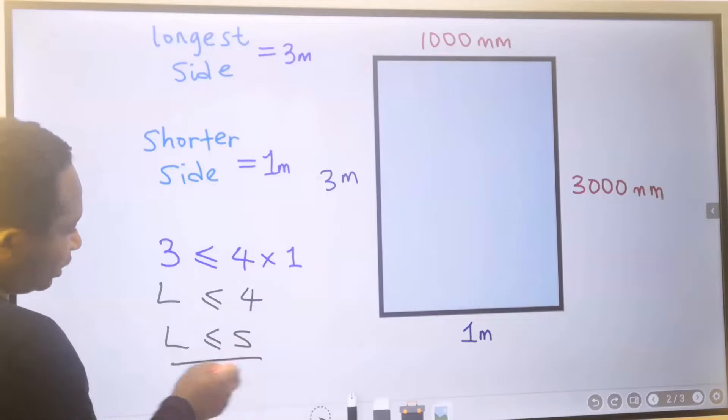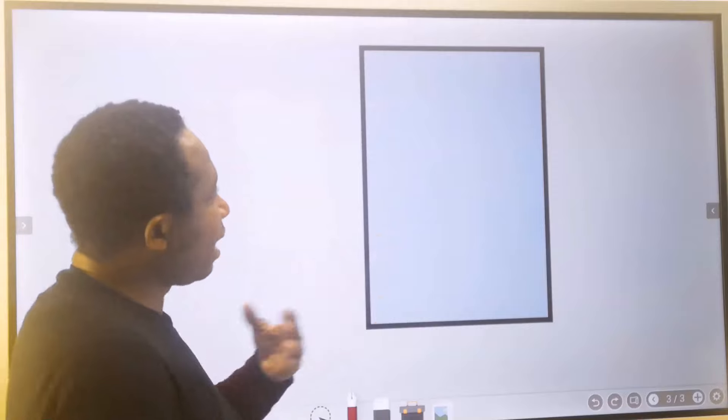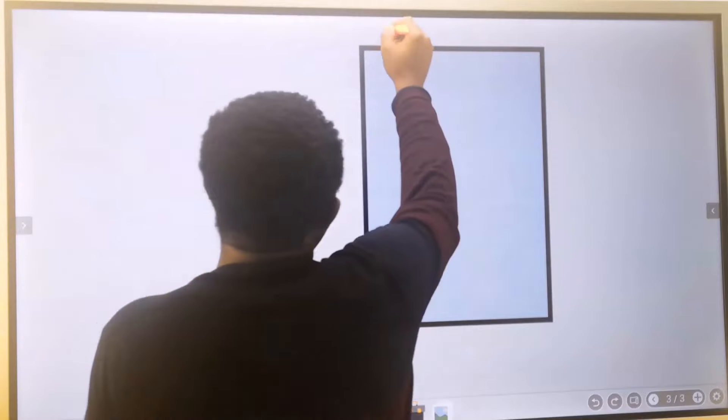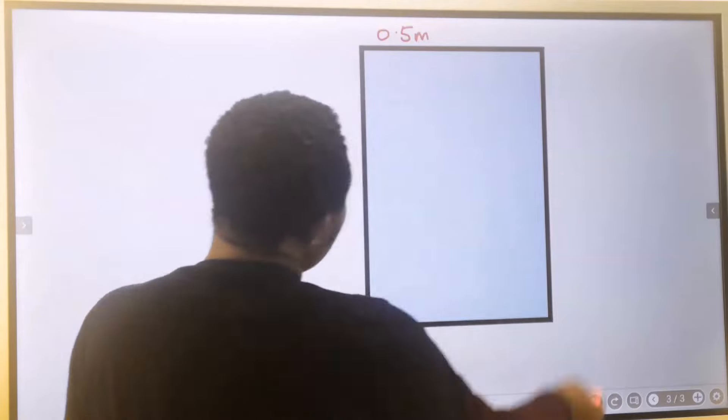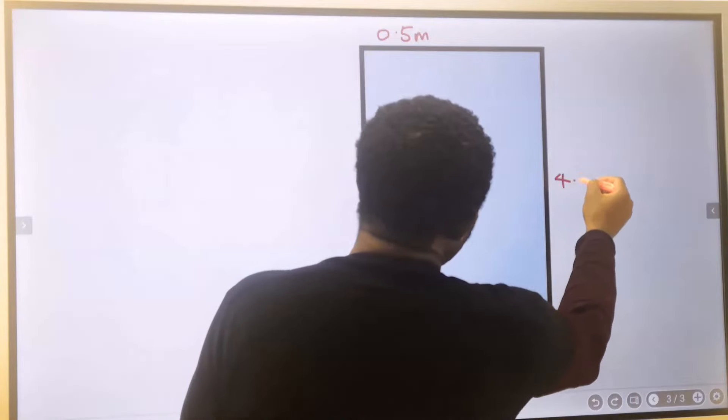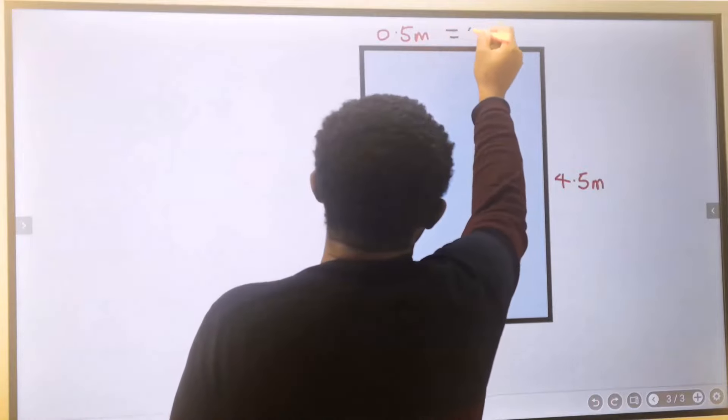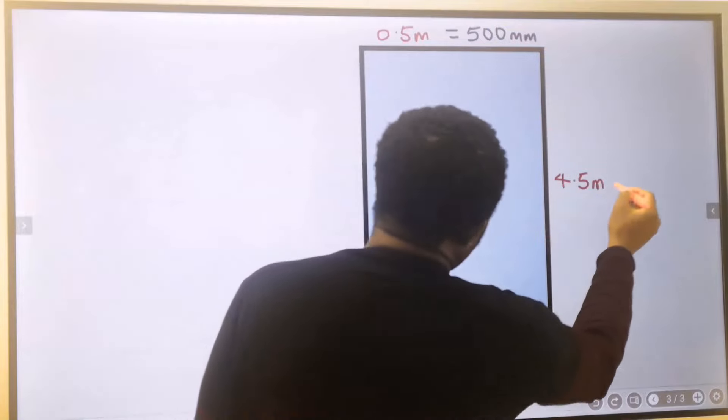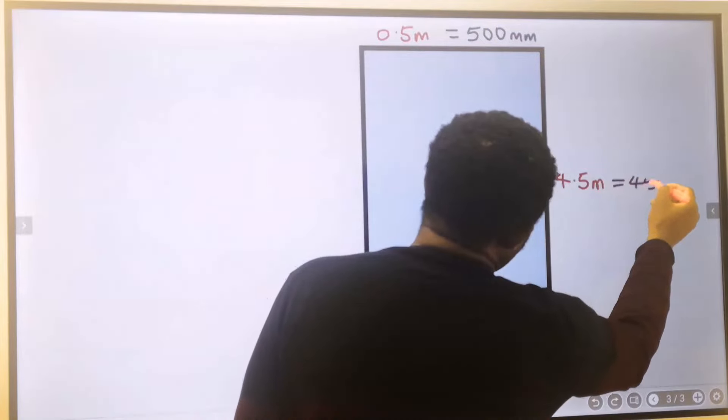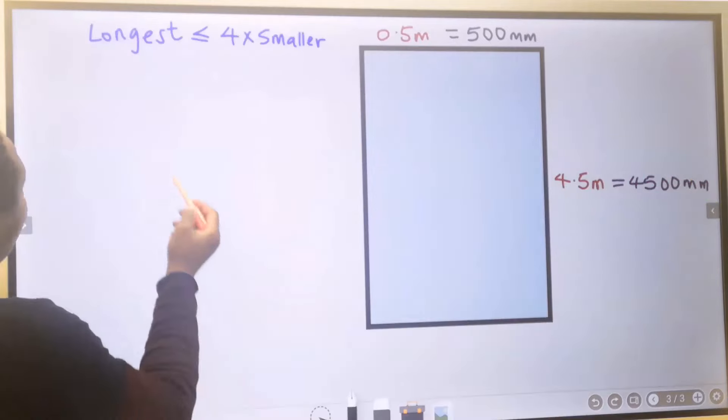And we are going to design this as a column footing. Let's consider this dimension. Here we have 0.5 meters, and here we have 4.5 meters. This is equivalent to 500 millimeters, and this length is equivalent to 4500 millimeters.